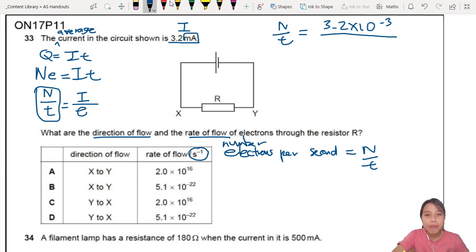So, we know time. We're trying to find e, right? So 1.6 times 10^-19. And what do we get for our rate of flow? 3.2 times 10^-3 over 1.6 times 10^-19 equals 2 times 10^16 per second.